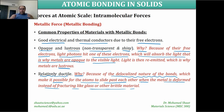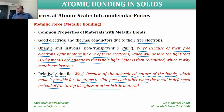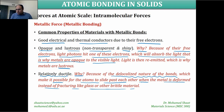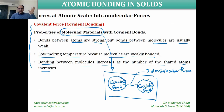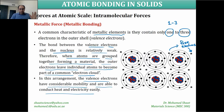If a material deforms without fracturing, it is ductile. Metallic materials are ductile because atoms can slide or glide past each other due to the delocalized nature of metallic bonding, making them more flexible compared to ceramic materials with ionic or covalent bonds.